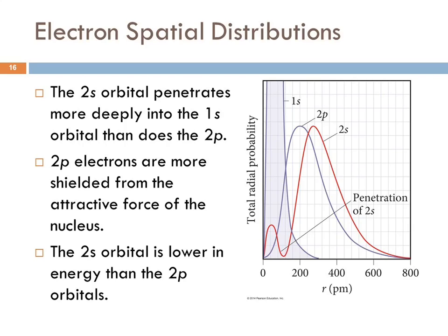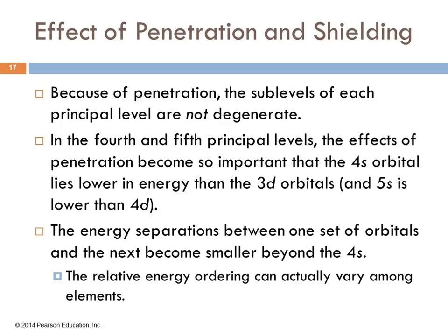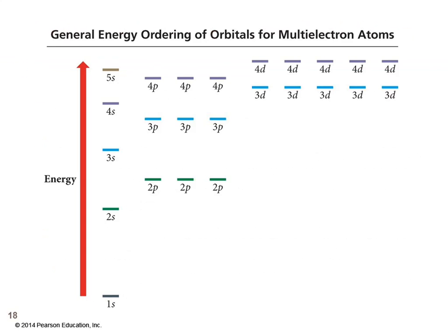If we look at the spatial distributions of these different orbitals, here's the 1s in the purple here, and the 2p and the 2s, we see that the s orbitals have more penetration than the p orbital does. The p orbitals are more shielded. The 2s is lower in energy than the 2p because it penetrates more deeply. So because of this, we've got s and p orbitals not being degenerate. They're not at the same level. The p is going to be higher. And at the fourth and the fifth, it becomes really important. And so then even the levels start to overlap. The separations get smaller and smaller as you go out. And then the relative energy ordering gets all crazy. That's my summary of that.